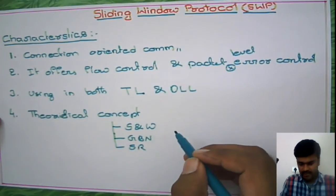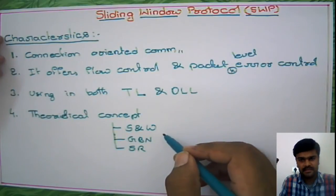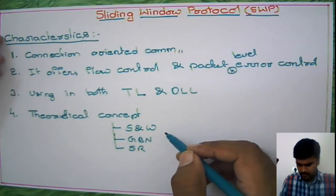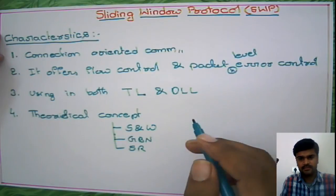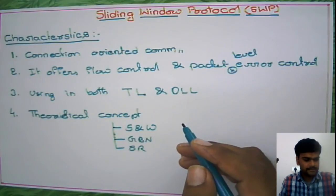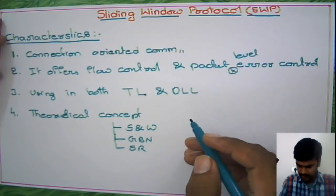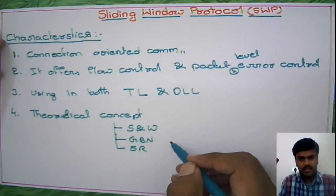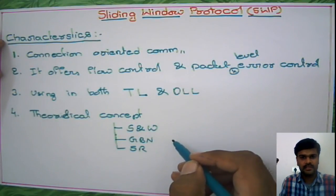In the continuation, we are going to discuss some terminologies and some delays in the next further videos. Before going to discuss those three implementable protocols, you need to know some terminologies like delays and timings — some definitions we need to know so that we can understand them very clearly. So in the continuation, we will see the delays in computer networks. Thank you.